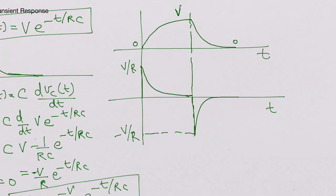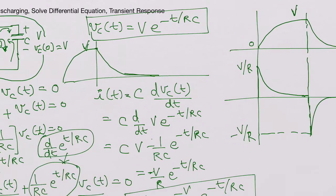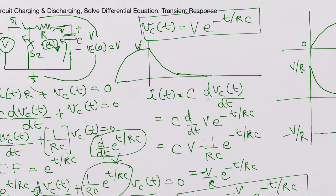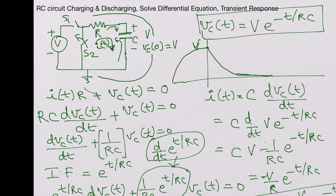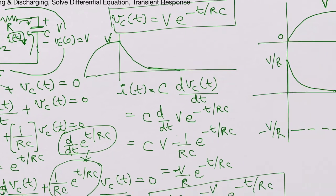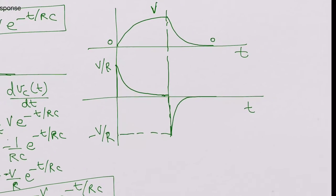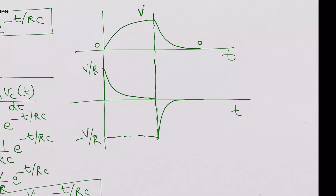You can actually simulate this circuit by placing a voltage source and two switches from the analog library together with a resistor R and capacitor C, and observe the voltage across the capacitor and the current flowing into the capacitor — it would look exactly like this.